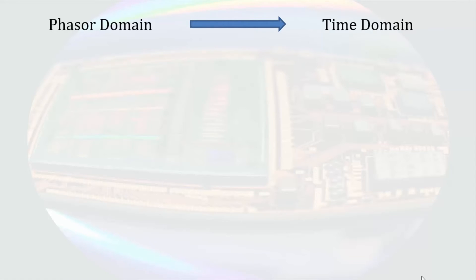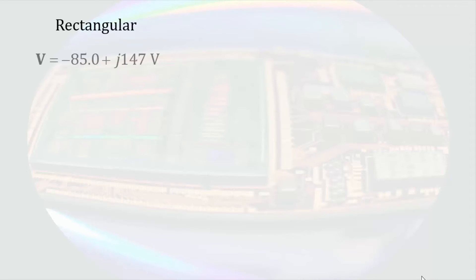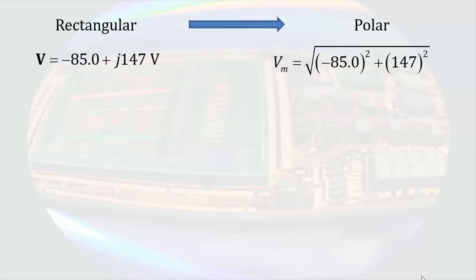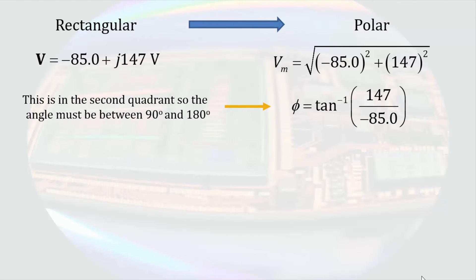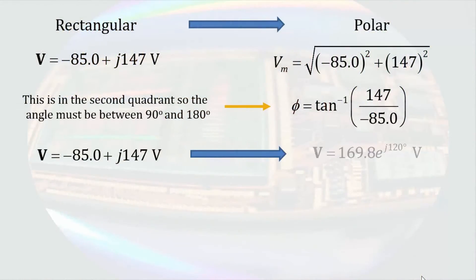After completing phasor domain analysis we will often need to write the function in the time domain again. From a polar phasor this is straightforward, but if we start in rectangular form we must first convert to polar form. The magnitude is the square root of the sum of the squares of the components; the angle is the arctangent of the imaginary part over the real part. Keep in mind that a positive imaginary component and a negative real component puts us in the second quadrant, so the angle must be between 90° and 180°. Some calculators won't differentiate signs in numerator vs. denominator, returning a wrong quadrant value — always check your angles. Performing these calculations gives 169.8·e^{j120°} volts, which rounds to 170·e^{j120°} volts.